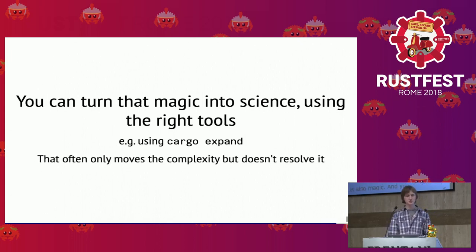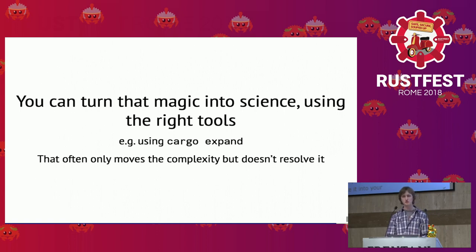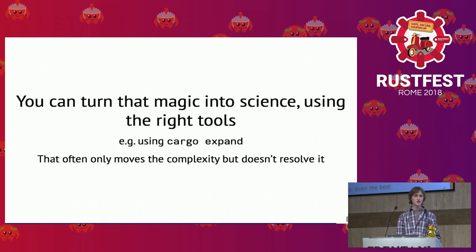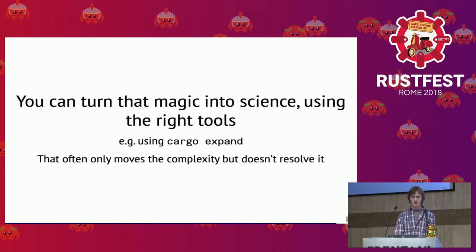Sadly, even the best tools will only move complexity towards using the tool, not actually resolve it. How can we come up with good ideas to write even more declarative, expressive, and useful code? And how can we teach this? How can we get a community to the point where using iterators is so common that you don't have to question it? How can we use macros in a non-magical sense?